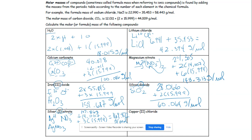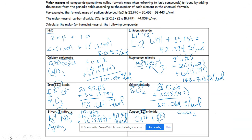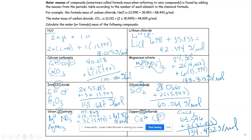Copper(II) chloride: copper has a Roman numeral of 2, so its charge is plus two. Chloride has a charge of minus one — not balanced. I need two chlorides, so the formula is CuCl₂. One copper (63.546) plus two chlorines (35.453): 63.546 + 2 × 35.453 = 134.452 grams per mole.